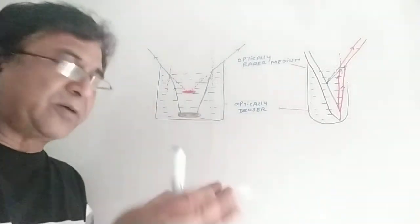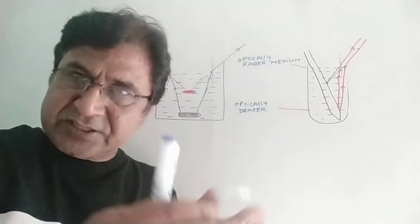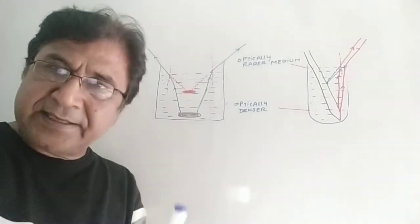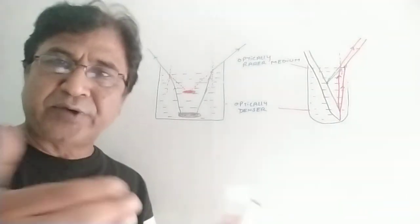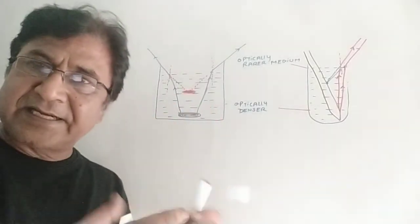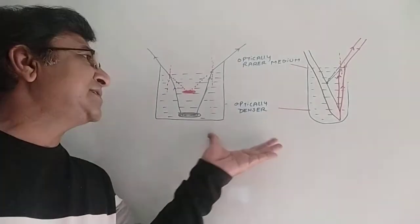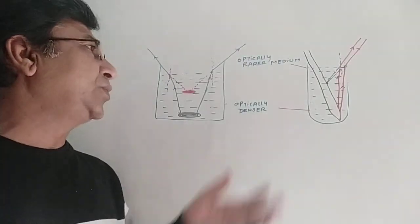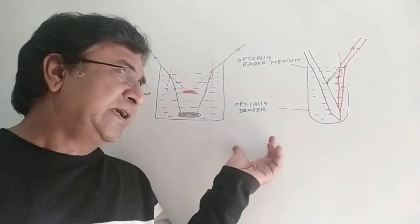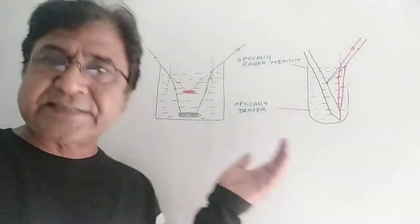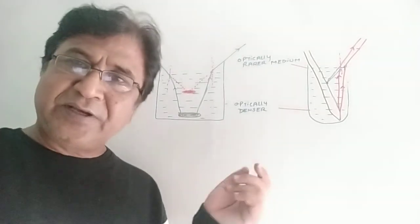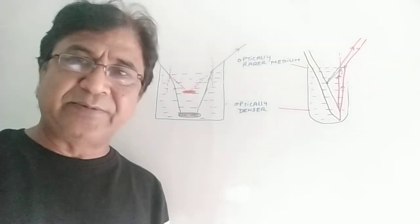A similar question can be asked: why does the base of a swimming pool appear above its original position? The same answer applies — rays from the base travel from water to air, from optically denser to rarer medium, bend away from the normal, and appear to meet above the original position. This completes all the concepts of the physics lesson on light reflection and refraction. If you have any problems, you can send your messages, and please subscribe if the videos are helping you.